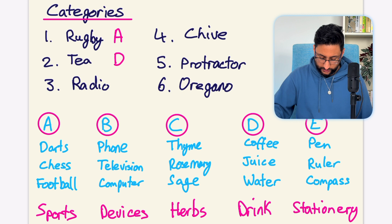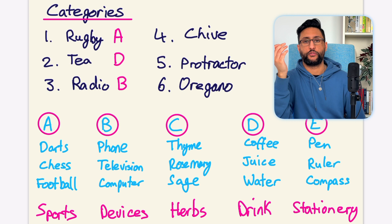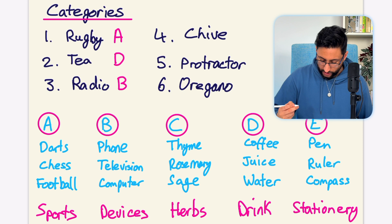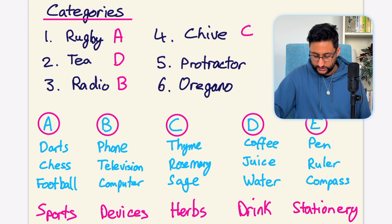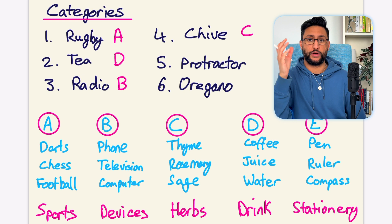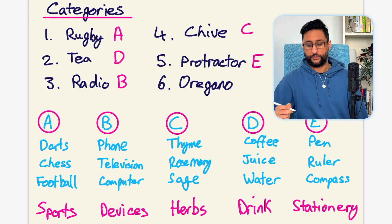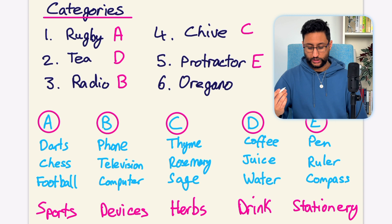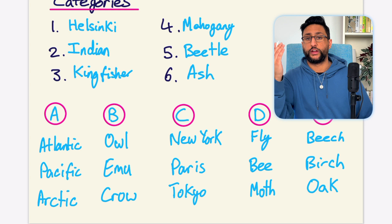Number three, radio. Radio is a type of device, so that's going to be B. Now four might throw you off — you need general knowledge for this. We have the word chive. Chive is a type of herb used in cooking, so that's going to be C. Number five, protractor. If you've done angles in school, you should know that a protractor is used to measure angles, and that would be E. And the last one is oregano — that relies heavily on your general knowledge. That is a type of herb, category C.